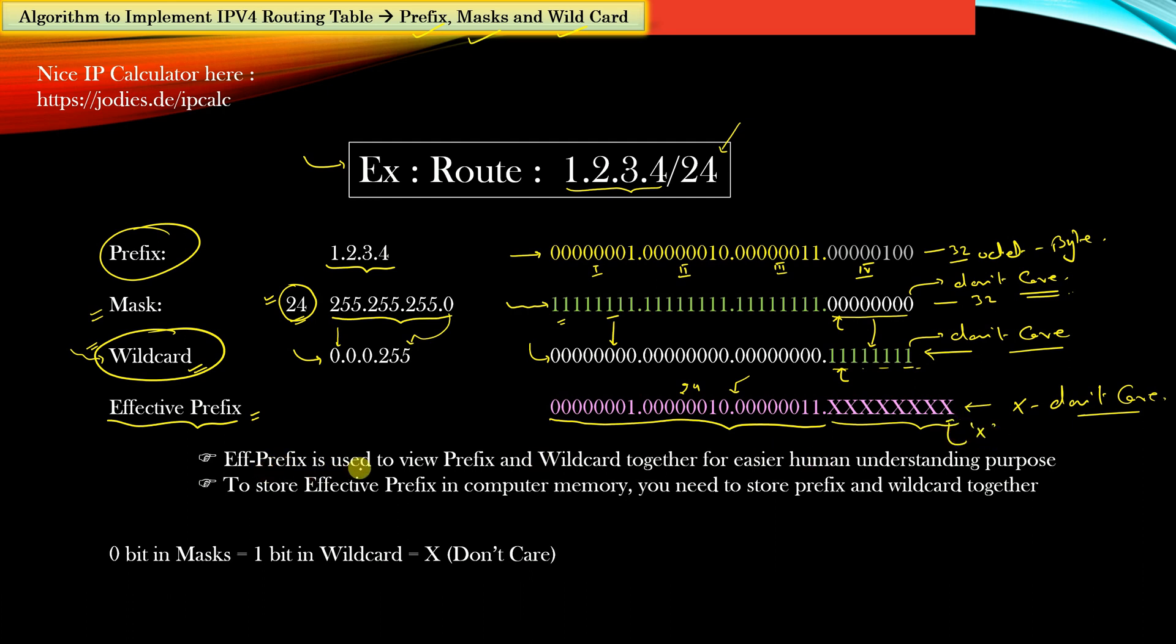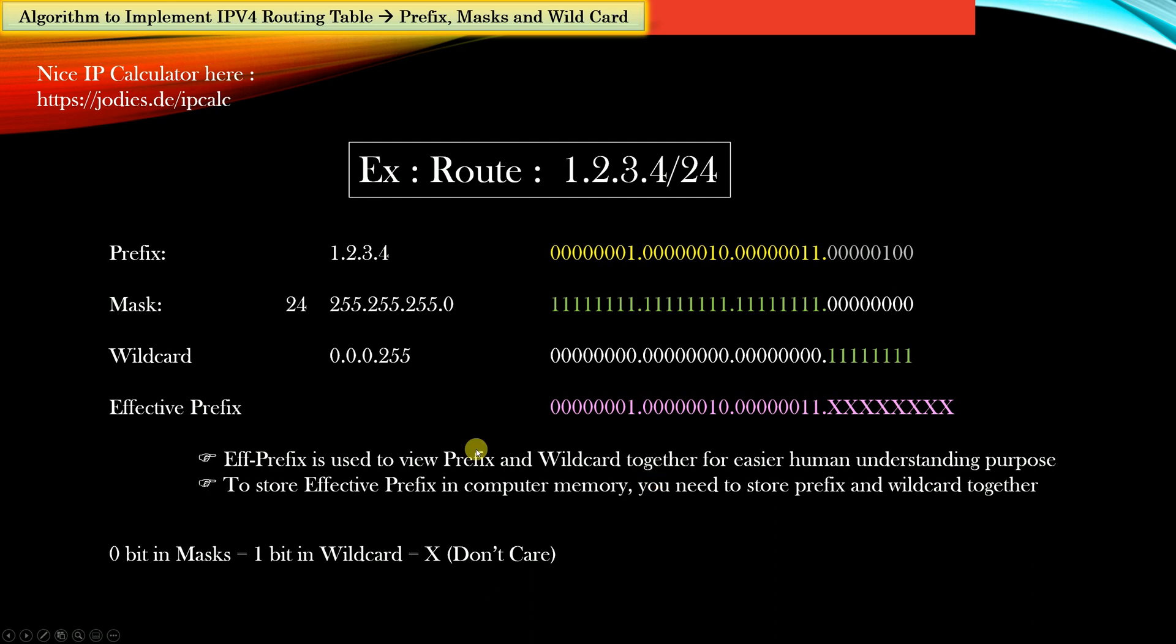Note that effective prefix is used to view the prefix and wildcard together for easier human understanding purpose only. To store the effective prefix in computer memory you still need a prefix and wildcard together saved in separate variables. In a separate variable you store the prefix part and in a separate variable you store the wildcard part. And combining these two you will get the effective prefix.